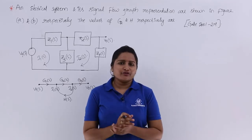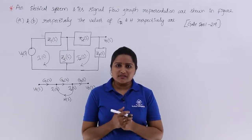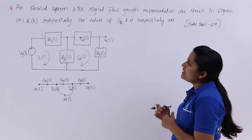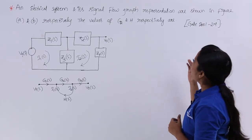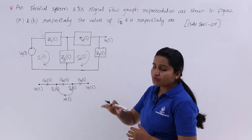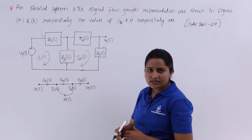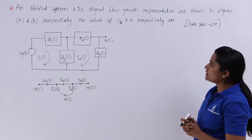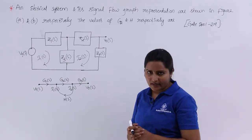In this video, we are going to discuss one more GATE problem related to control systems. This is a GATE 2001 two-mark problem. An electrical system and its signal flow graph representation are shown in figure A and figure B. We need to find out the values of G2(S) and H(S).